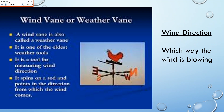Here we have a weather vane, or wind vane. Basically, it blows and it points which way the wind's blowing — it tells you wind direction. A wind vane is also called a weather vane. It's one of the oldest weather tools; it spins on a rod and points in the direction which the wind comes.